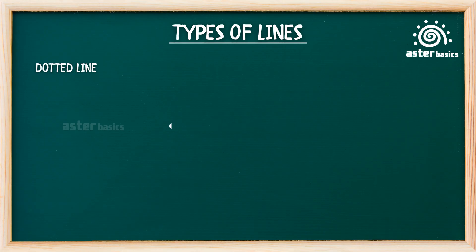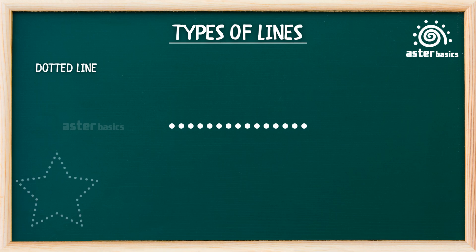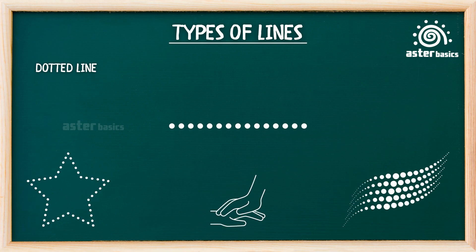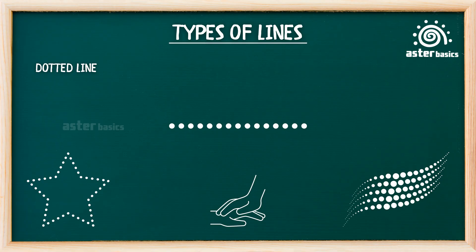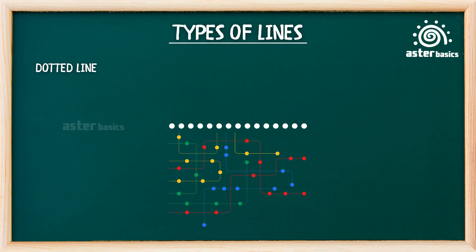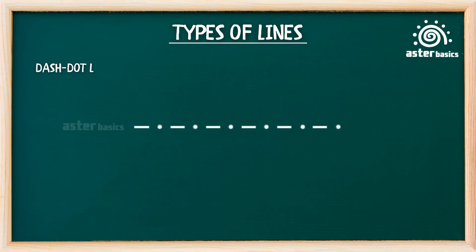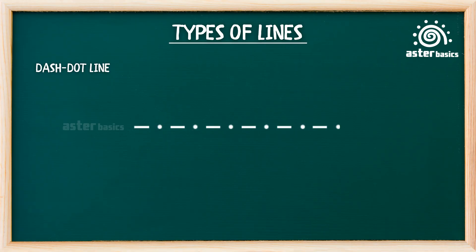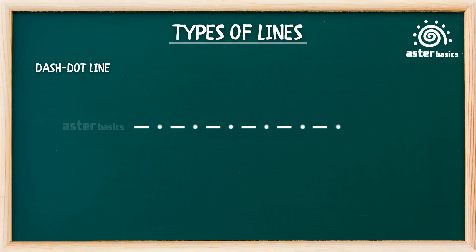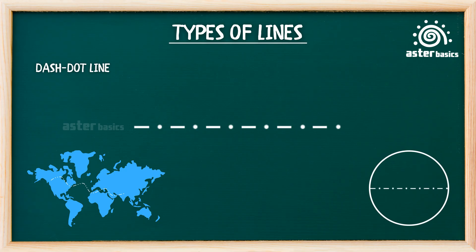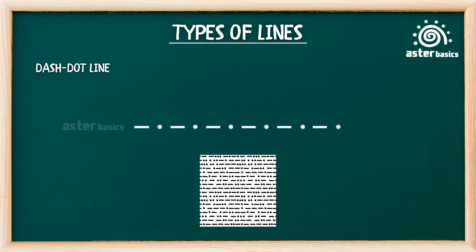Dotted line: a line made of tiny dots placed one after another. Dotted lines are used for tracing shapes, gentle outlines, or soft designs. They're like hopscotch spots for your pencil — super fun for tracing and playing connect the dots. Dash-dot line: a repeating pattern of dash, dot, dash, dot. Dash-dot lines are used for drawing special maps, diagrams, and secret drawings. It's a line doing Morse code — like your pencil is trying to send a hidden message.